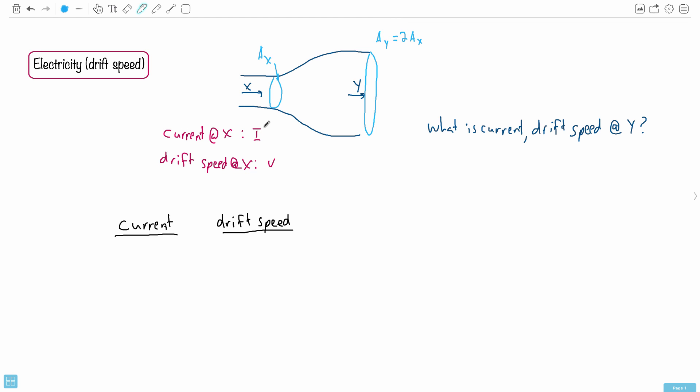Now we're told that at x, the current is i, and the drift speed is called v. And at y, they're basically saying, what is the current and drift speed at y? That's what they want. They want to know what's the current and what's the drift speed at this point.